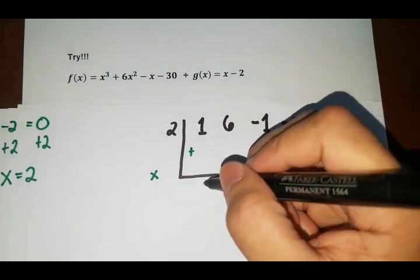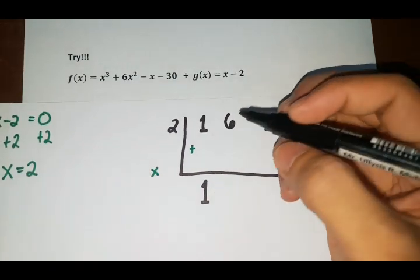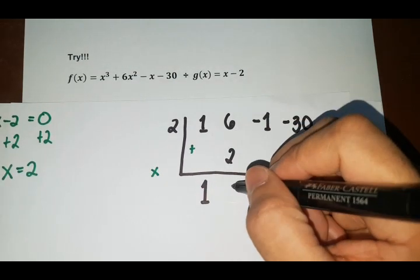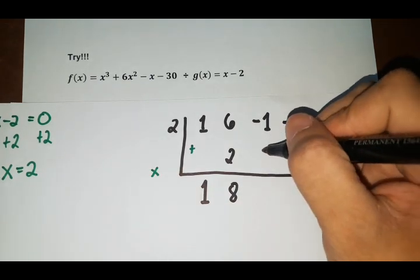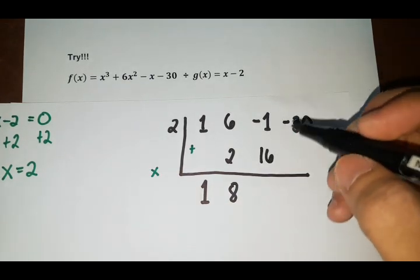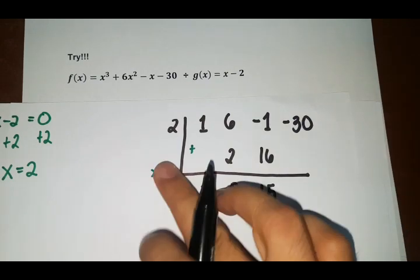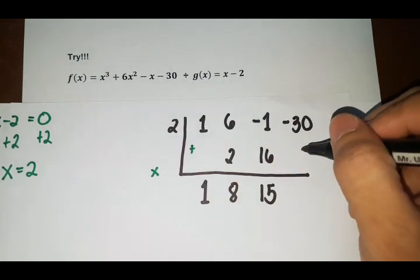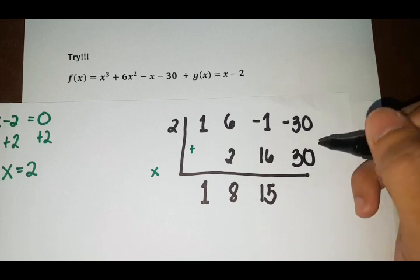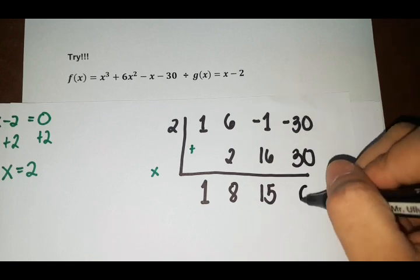So 1, bring down. 1 times 2 is 2. 6 plus 2 is 8. 8 times 2 is 16. So negative 1 plus 16, that is 15. 15 times 2, that is 30. So our remainder is 0.